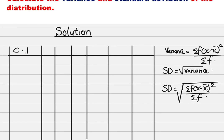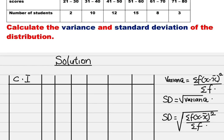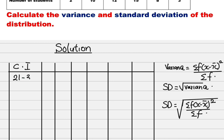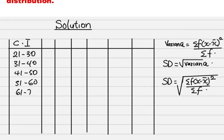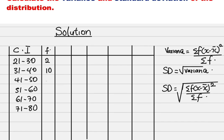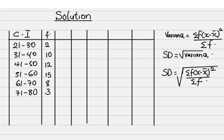The first thing we need to set up is our class intervals. We have: 21–30, 31–40, 41–50, 51–60, 61–70, and 71–80. We have our frequencies: 2, 10, 12, 15, 8, and 3.